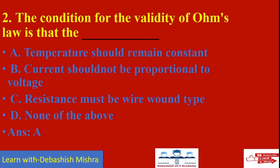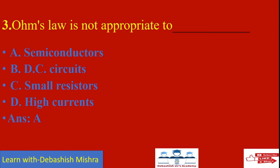The condition for the validity of Ohm's Law is that: the temperature should remain constant, current should not be proportional to voltage, resistance must be wire-wound type, or none of these? According to Ohm's Law, temperature should remain constant — that is correct. Current should not be proportional to voltage is wrong, as current is proportional to voltage. Resistance must be wire-wound type is also not necessary. So answer A is correct: temperature should remain constant.